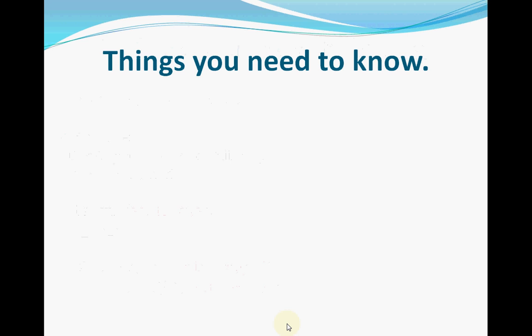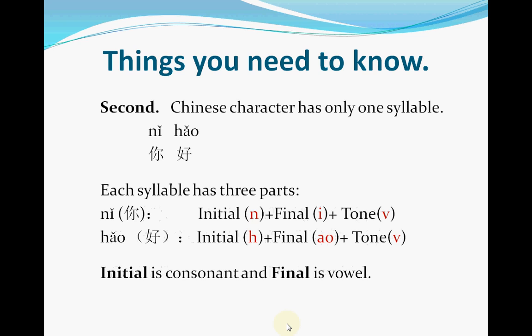The second thing you need to know about Pinyin is that each Chinese character has only one syllable. Each syllable has three parts. For example, ni: the first part is the initial — n; the second part is the final — i; and the third part is the tone. Put them together: ni. Similarly, hao: initial h, final ao, and the tone. So you may notice that the initial is a consonant and the final is a vowel.